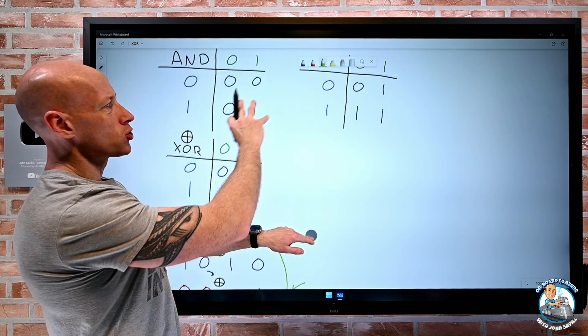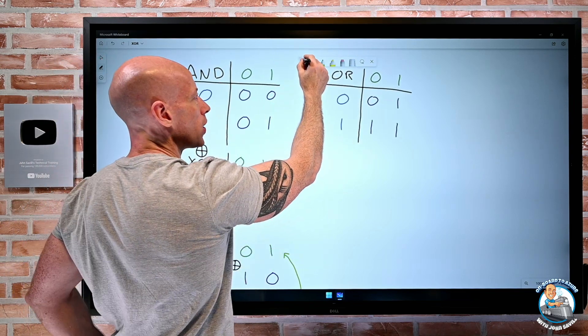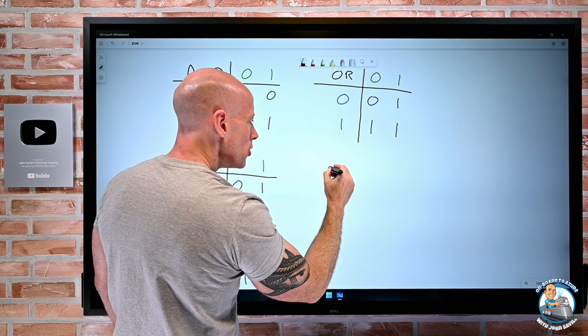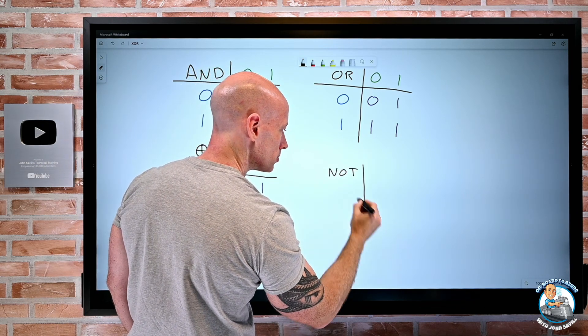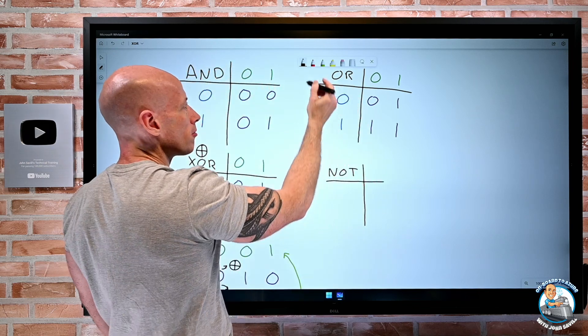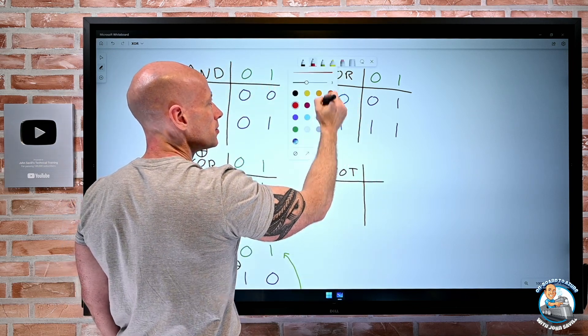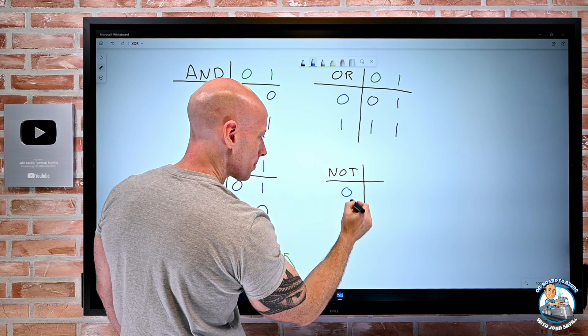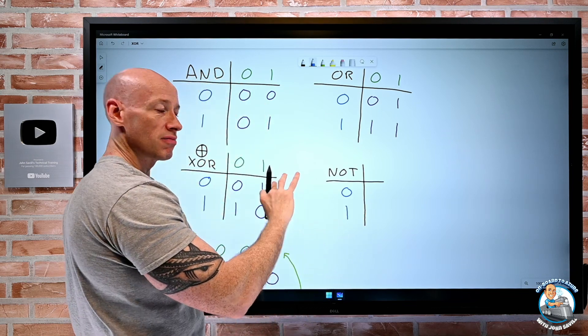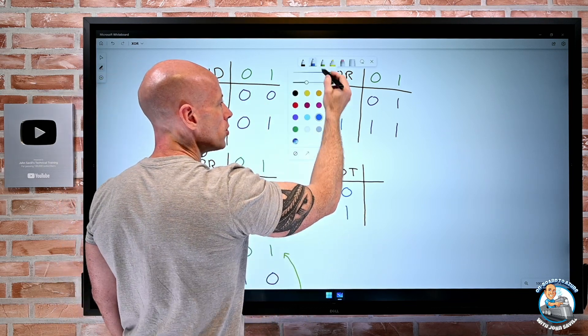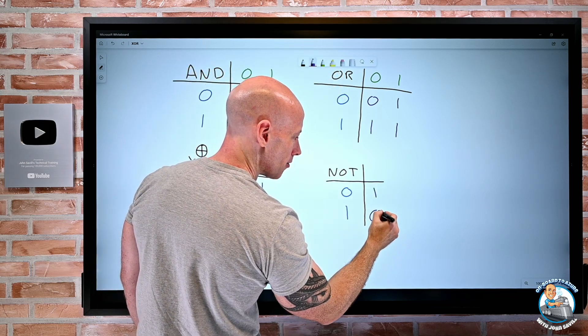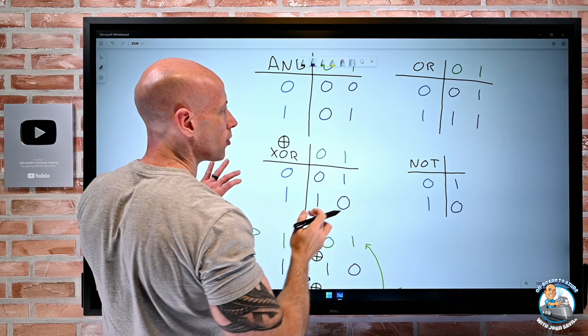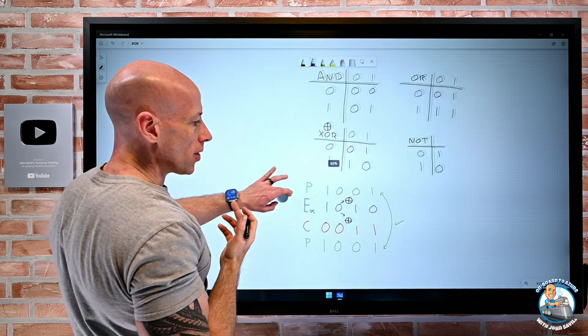I guess the most common things you might see, I should quickly mention NOT as well. NOT just operates on a single binary. So I have some binary, 0 or 1. And NOT just flips it. So the NOT would just say, well 0 becomes 1, 1 becomes 0. So just when you think about all the different options, that's another common one you'll see.